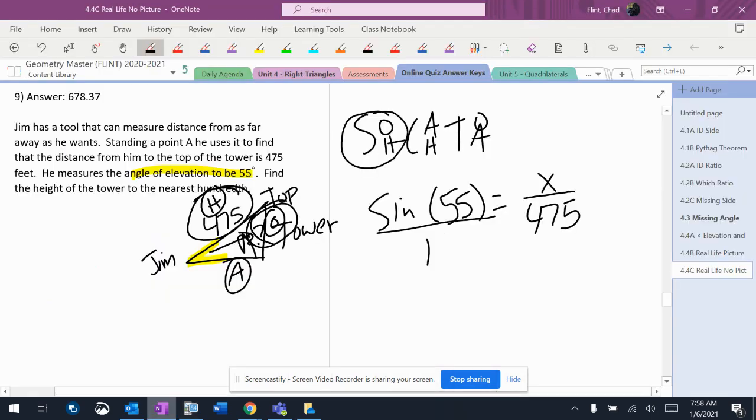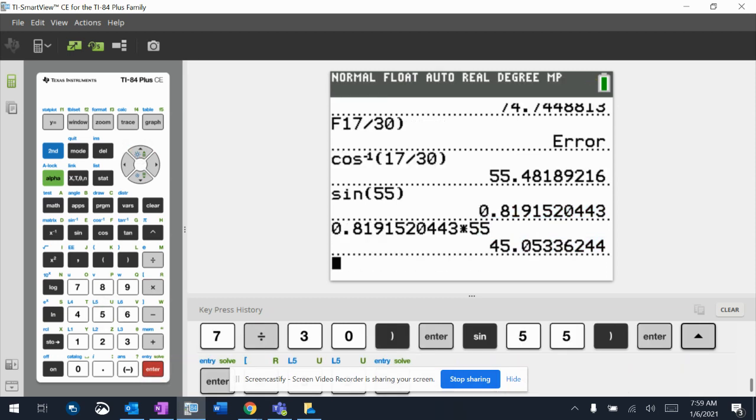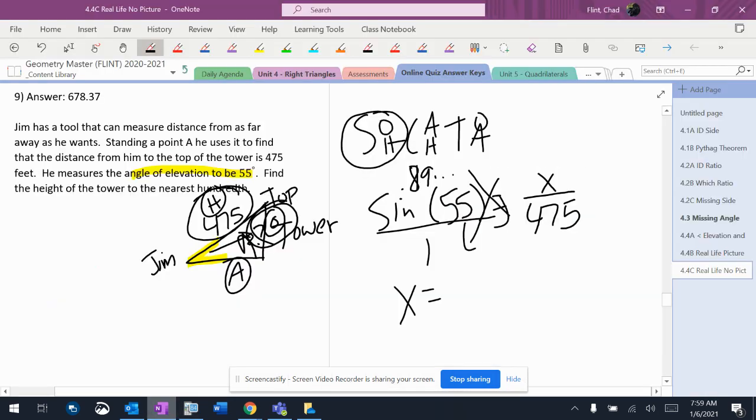0.819. So I get x equals, we're going to cross multiply, the decimal gets multiplied directly by the 55, and I get 45.053. It says nearest hundredth, that means round using the three, so my final answer is going to be 45.05. Wait, I didn't multiply it right. I multiplied by 55 for whatever reason. Let me redo that.